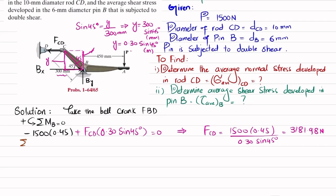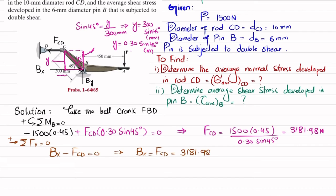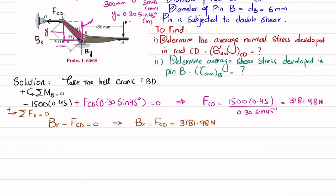Next, using the equilibrium equation for forces in the X direction (sum of forces in X = 0, with rightward positive): BX − FCD = 0, so BX = FCD = 3181.98 N. For the vertical direction (sum of forces in Y = 0): BY − P = 0, so BY = 1500 N. We now have all three forces.